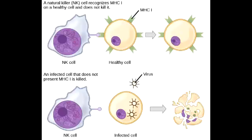Describe the action of the natural killer cells. Natural killer cells use perforin and granzymes to induce apoptosis, and in this way they kill off virally infected cells and tumor cells.